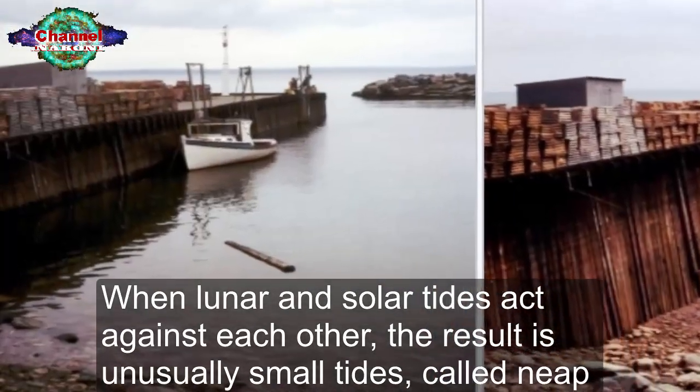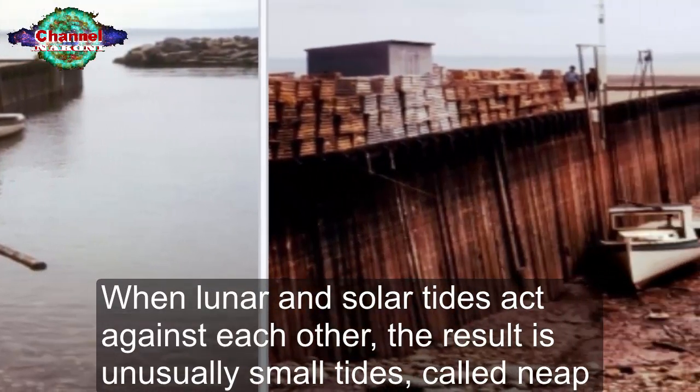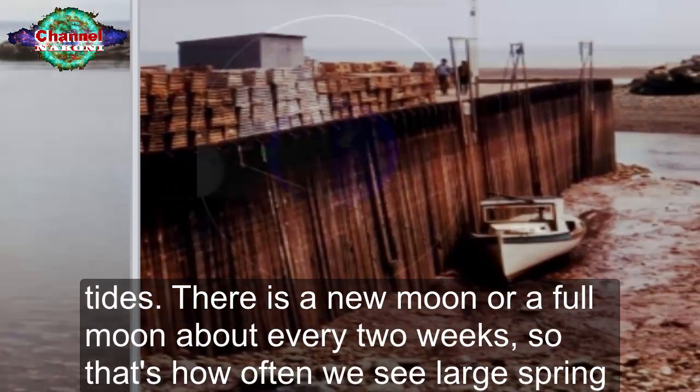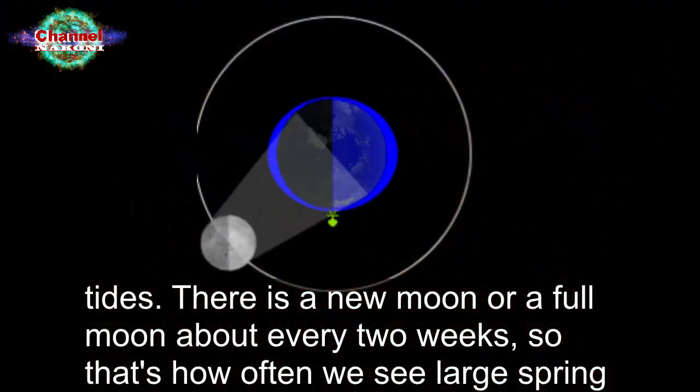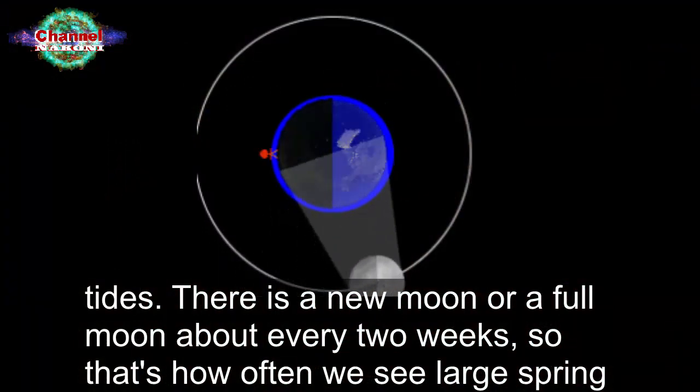When lunar and solar tides act against each other, the result is unusually small tides called neap tides. There is a new moon or a full moon about every two weeks, so that's how often we see large spring tides.